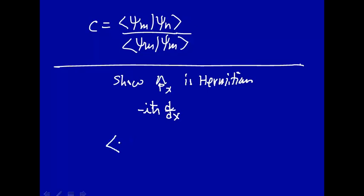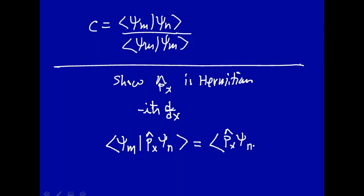If it's Hermitian, that means that if we take some wave function psi_m and operate with the momentum operator on some wave function psi_n, that is equal to the momentum operator operating on psi_m, complex conjugate, times psi_n. So if this relationship is true, then p is Hermitian. It might be useful to go back to the original notation.